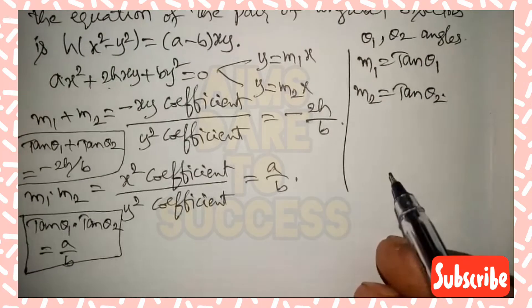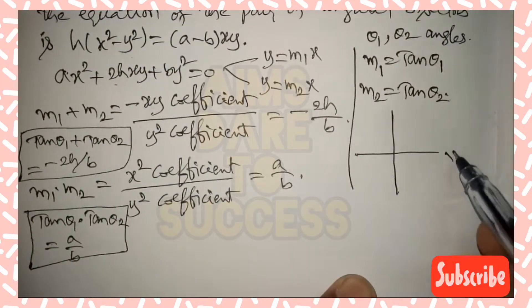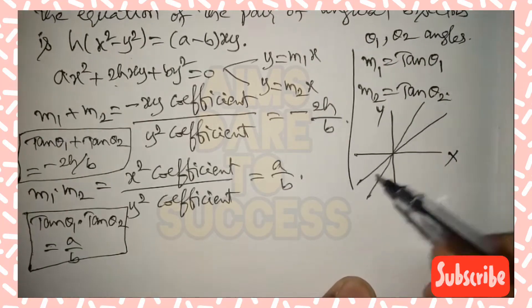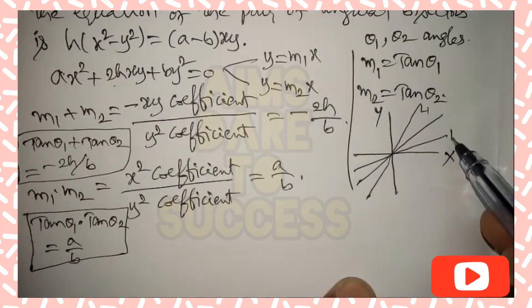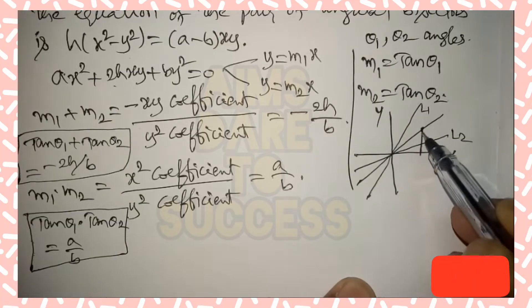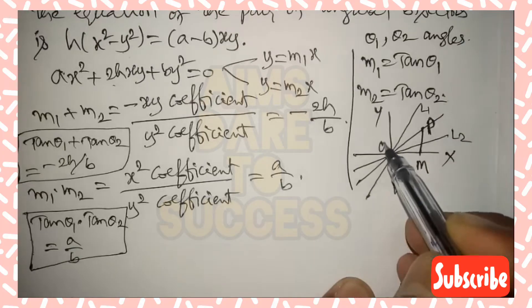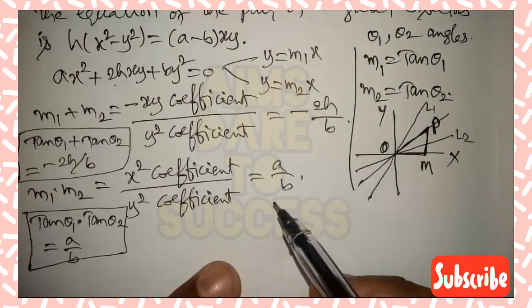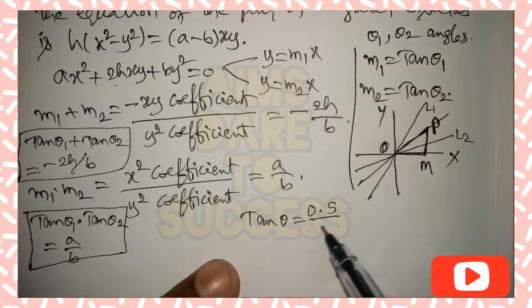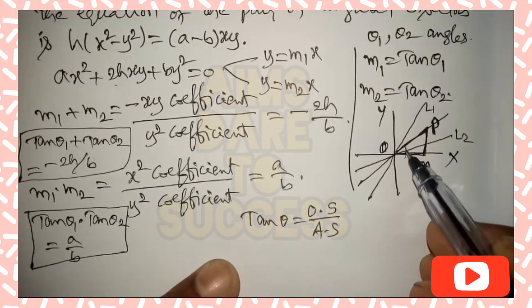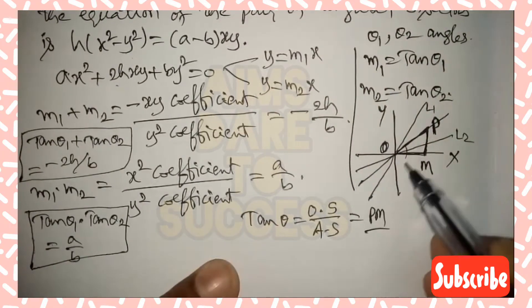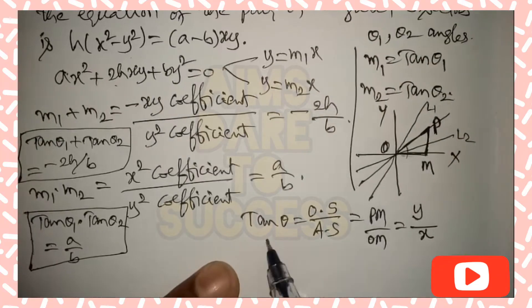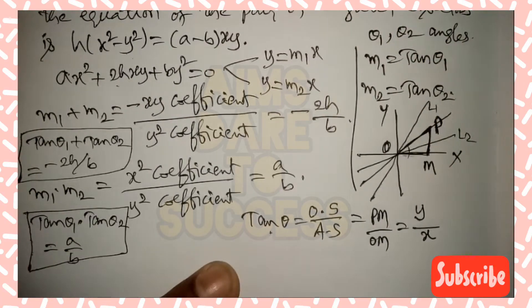We draw the x-axis, y-axis, and three lines through the origin — line one, line two, and a middle line. Taking a point P on the bisector, we form triangle OPM with respect to the origin. In triangle OPM, tan θ = opposite side / adjacent side = PM / OM. Since PM is parallel to the y-axis and OM is along the x-axis, tan θ = y/x.